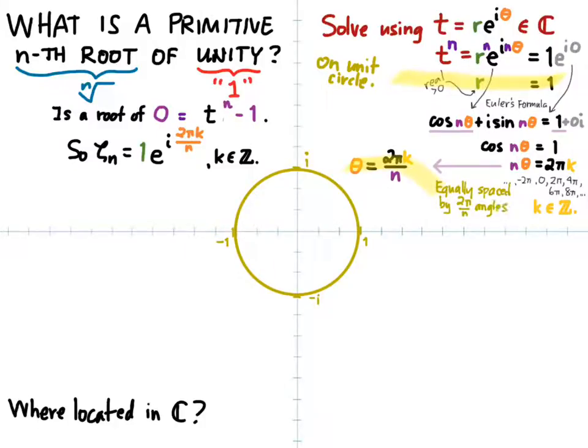What the angles tell us, 2 pi k over n, is that all of our n-th roots of unity are equally spaced on the unit circle by an angle of 2 pi over n. So as an example, let's suppose n is equal to 6, so we're looking for the primitive 6th roots of unity. That angle, 2 pi over n, is 2 pi over 6, or pi over 3, or for the Luddites in the audience, 60 degrees.